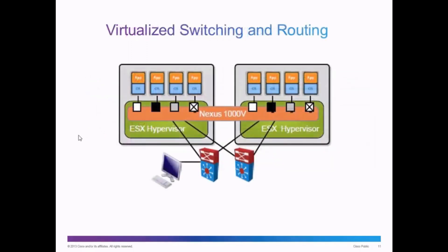In addition to virtual computing, we can also virtualize switching and routing. In this slide, we can see two VMware ESXi hypervisors. The virtual computers are all networked together with a Cisco Nexus 1000v virtual switch. The virtual switch brings the power of a Cisco switch to the virtualized network environment.